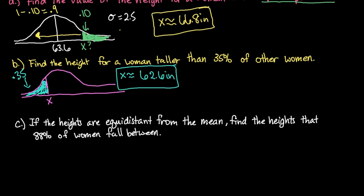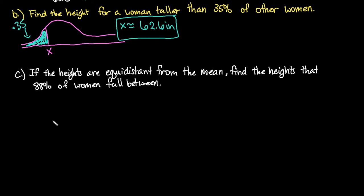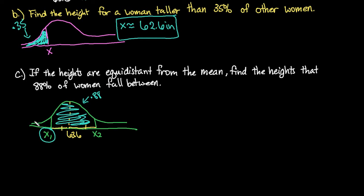For our last one, if the heights are equidistant from the mean, we want to find the heights that 88% of women fall between. So again, we have the normal distribution. This time, we're going to have a first x value and a second x value that are equidistant from the mean. So our mean was still centered at 63.6. This distance here and this distance here are going to be the same. So it's basically going to be centered. We were told that 88% of our area is in between. So we need to find the area to the left of our first one.